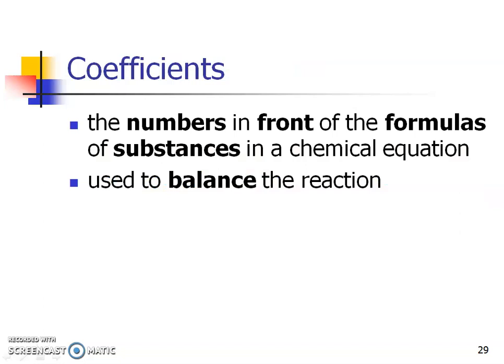Those coefficients are what we're going to use to balance the reaction. Those are going to be the only numbers that we can change. In the next part of this chapter, you're going to learn the difference of those subscripts versus coefficients and how they play a part on those elements in those substances. Those are the only numbers we can put in front of the whole entire formula of our substance in order to balance the reaction.